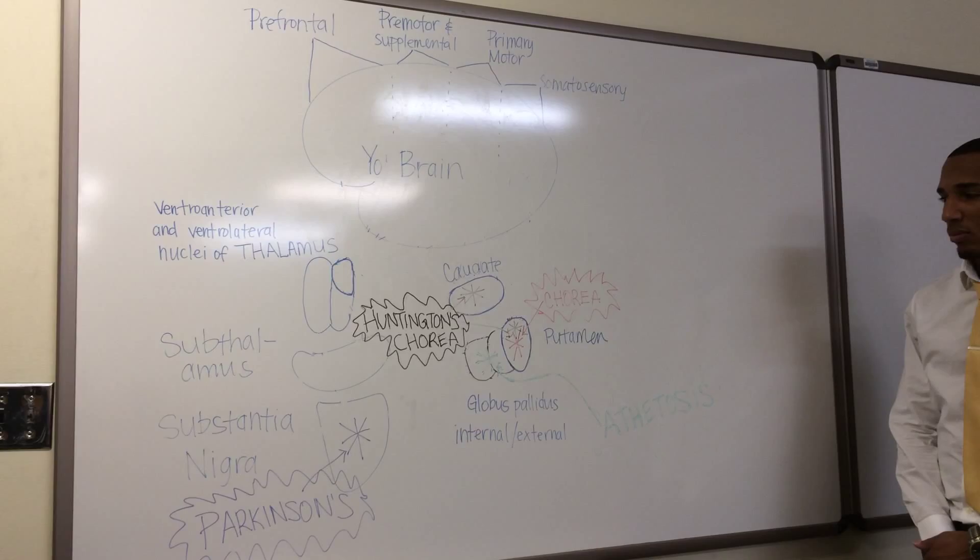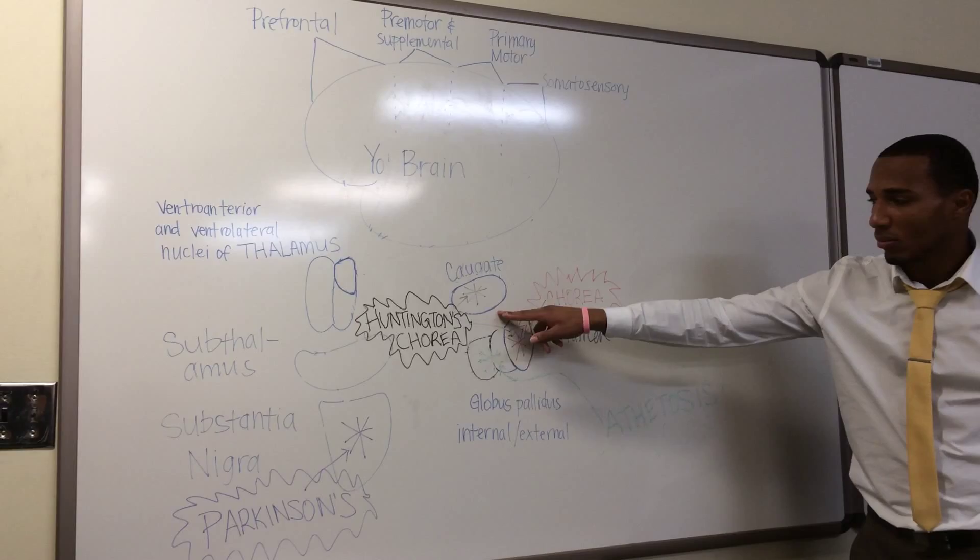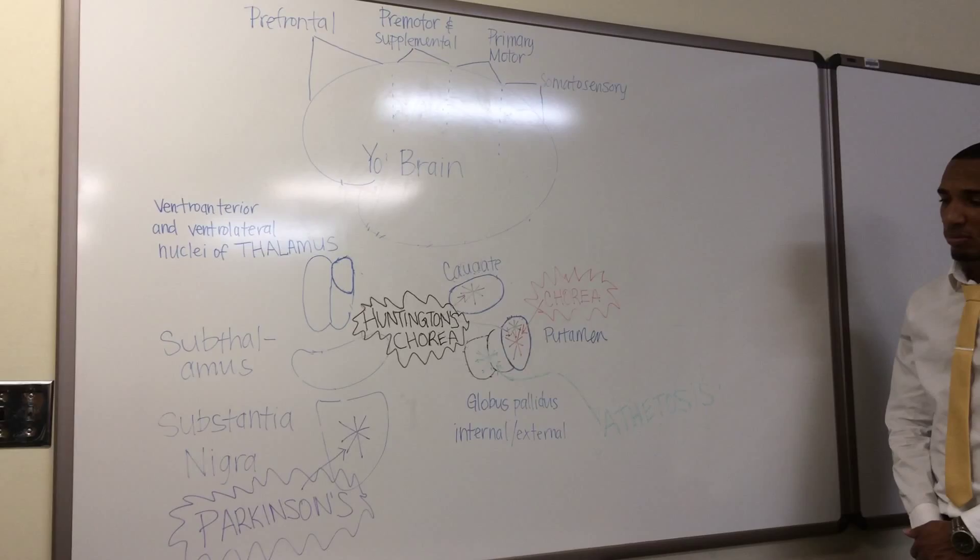The next lesion site is the caudate nucleus and putamen. A clinical abnormality that occurs here is Huntington's chorea. This is characterized by loss of GABA-containing neurons to globus pallidus and substantia nigra.